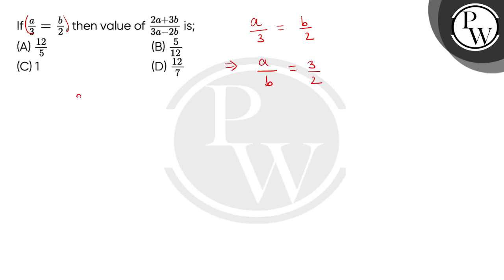Now, what we find value is that expression 2a plus 3b divided by 3a minus 2b. Here we get numerator and denominator, so we get b within bracket 2a by b plus 3, and whole divided by b, 3a divided by b minus 2.